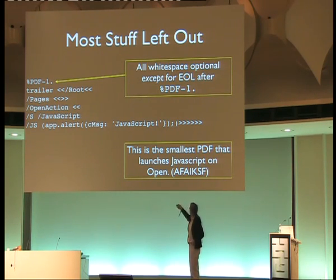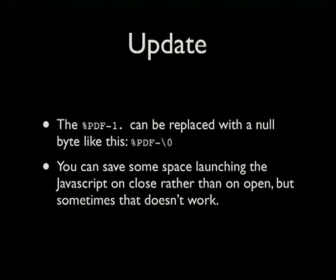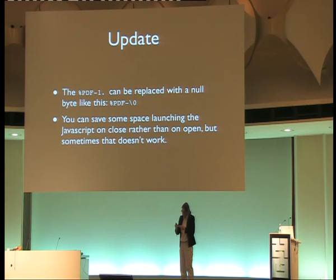There are two optimizations people pointed out: if you replace that with a null byte, you can shave off two bytes. And if you use the on-close action, it's a few bytes shorter than on-open. Although, because it's zero pages, when Acrobat opens a document with no pages, it kind of sits around doing nothing for a while. When an event gets sent to it — like you scroll on the page — it says there's something wrong with this PDF and pops up an error. If you do the JavaScript on-open, it runs before that happens. If you do it on-close and the person closes Acrobat instead of clicking OK, the on-close never gets run. It's only about a 20-byte difference.